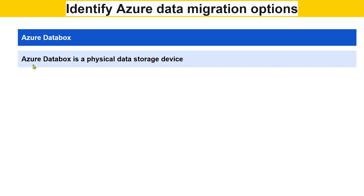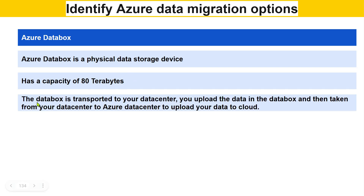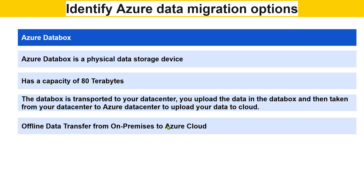The next thing is Azure Data Box. Azure Data Box is a physical data storage device — think of those days when we had a pen drive and used to transfer data. It's similar to that. It's an offline data migration option. The Data Box is a large storage device with a capacity of 80 terabytes. It is transported to your data center, you upload all your data into it offline, and then it is taken securely from your data center to the Azure data center to upload your data to cloud.